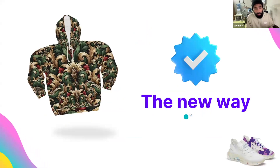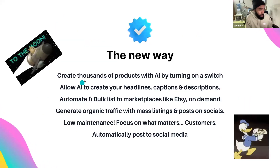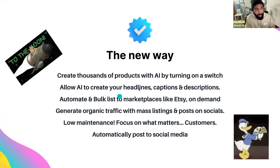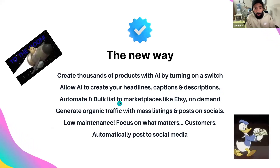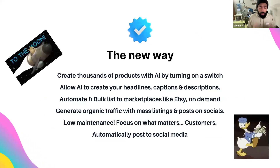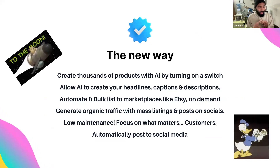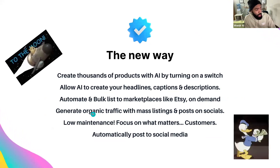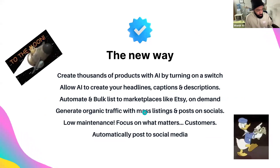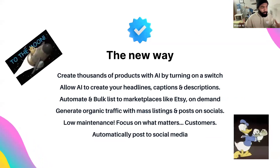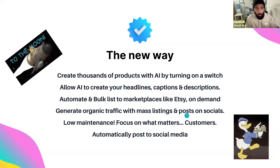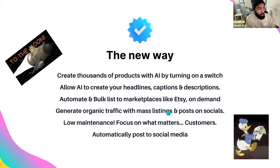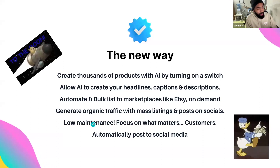That's where Wonder AI comes into play. With automation, you can create thousands of products by essentially turning on a switch. The AI creates your headlines, captions, and descriptions, and gets those products marketed and displayed on different marketplace platforms — whether it's Amazon, Shopify, Etsy, Google Shopping, or Instagram Shopping. You can also generate organic traffic by having so many listings out there. Best of all, it's low maintenance.